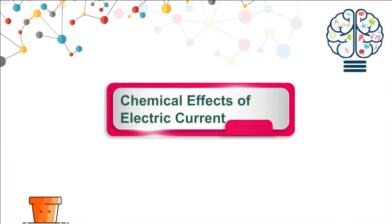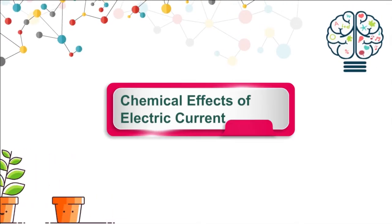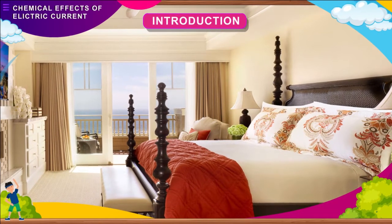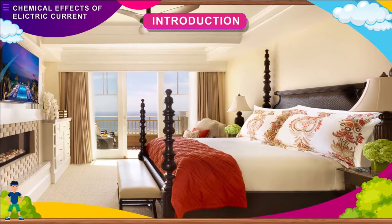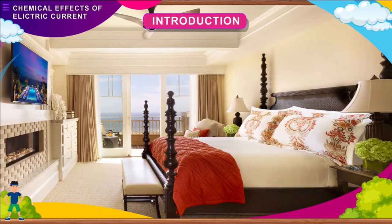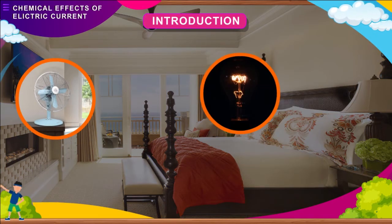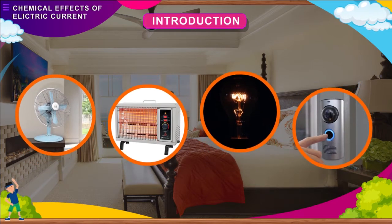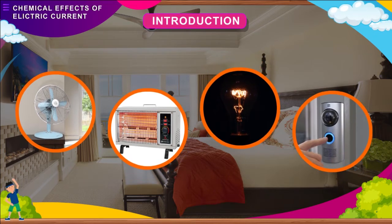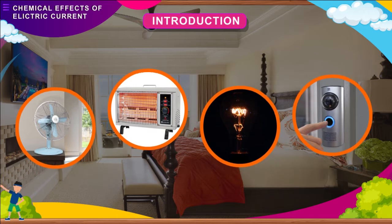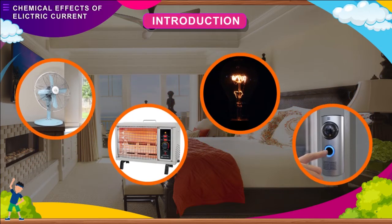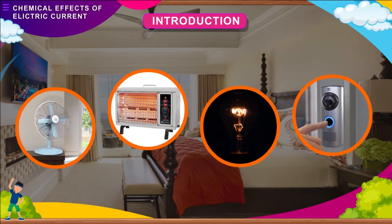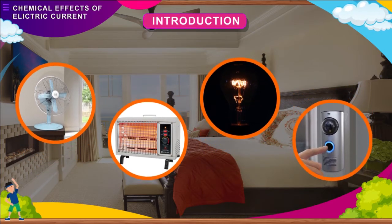Chemical effects of electric current. We use electricity in our homes to operate different electrical appliances such as fans, bulbs, heaters, doorbells and various other things. These devices make use of two different effects of electric current: the magnetic effect and heating effect. Another widely used effect of electric current is its chemical effect. Here we will study about the chemical effects of electric current.